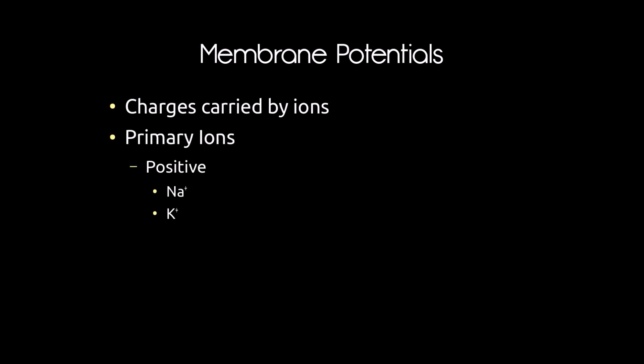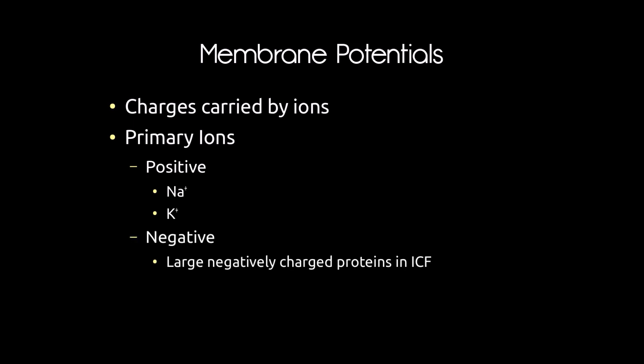The primary ions used on the positive side are sodium (Na⁺, one positive charge) and potassium (K⁺, also one positive charge). The negative charges are largely carried by large negatively charged proteins in the intracellular fluid inside the cell — these can't get in or out, they're trapped inside. So the only small mobile ions we use are both positively charged, meaning most charge movement is accomplished by moving these positive ions around.